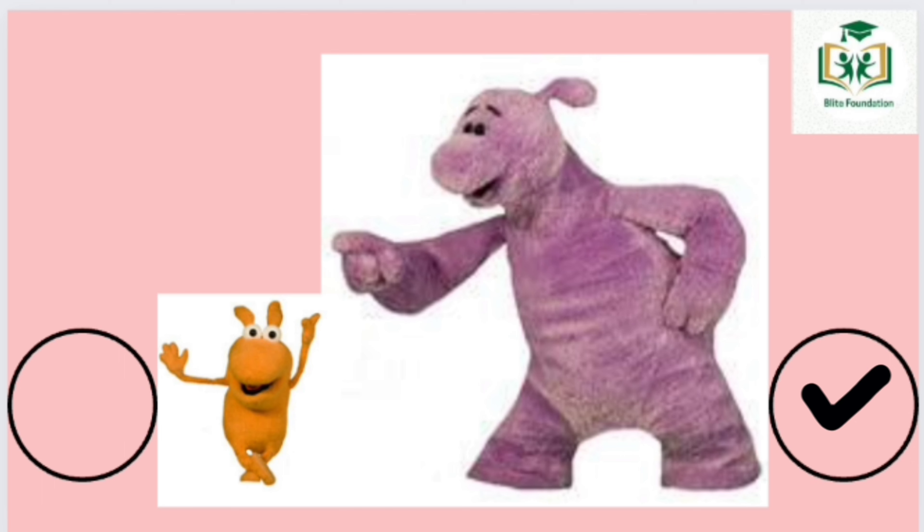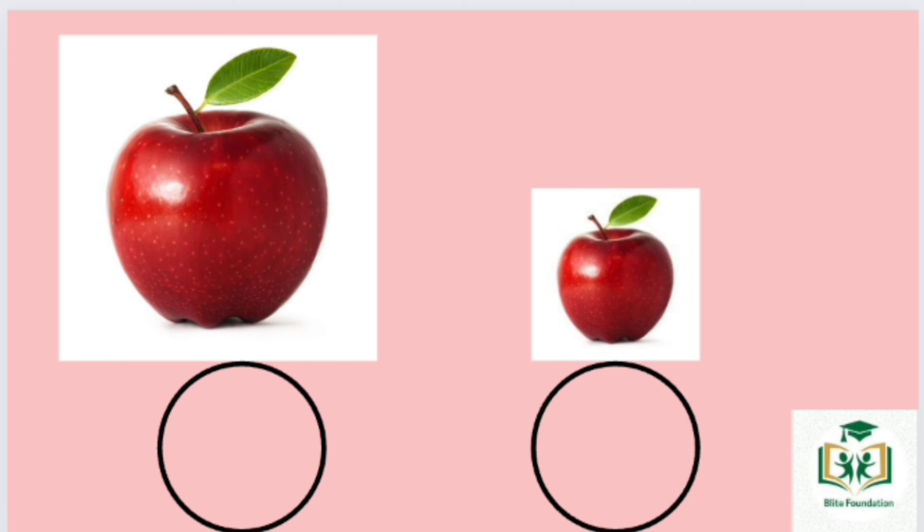Right one is the bigger one. Left one is the smaller one. Left apple is the bigger one. Right apple is the smaller one.